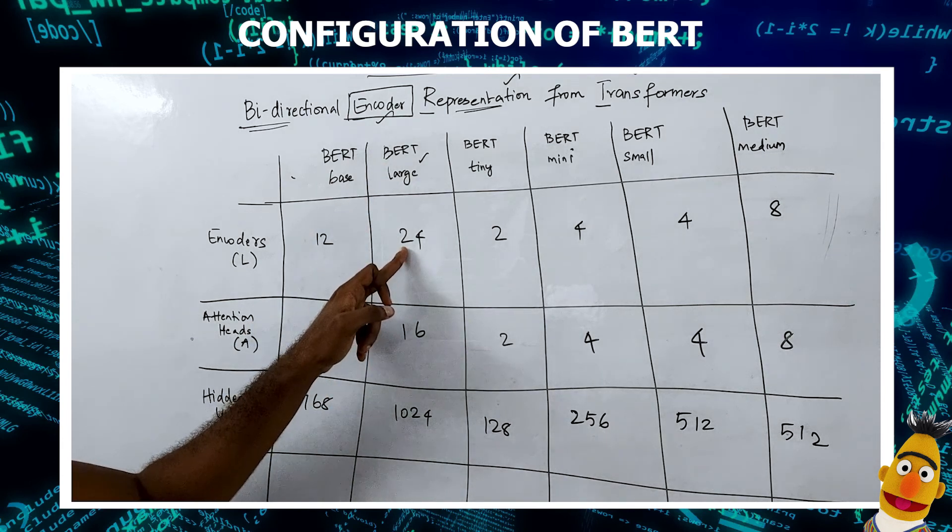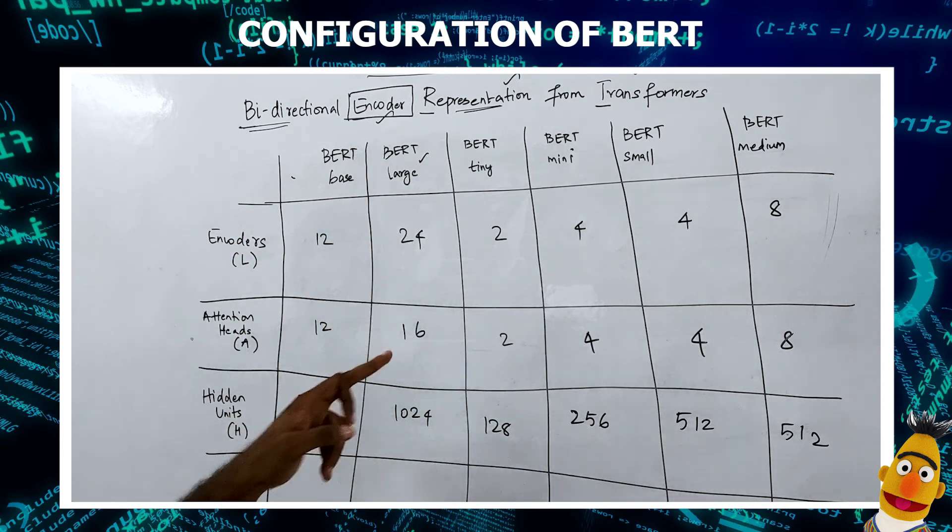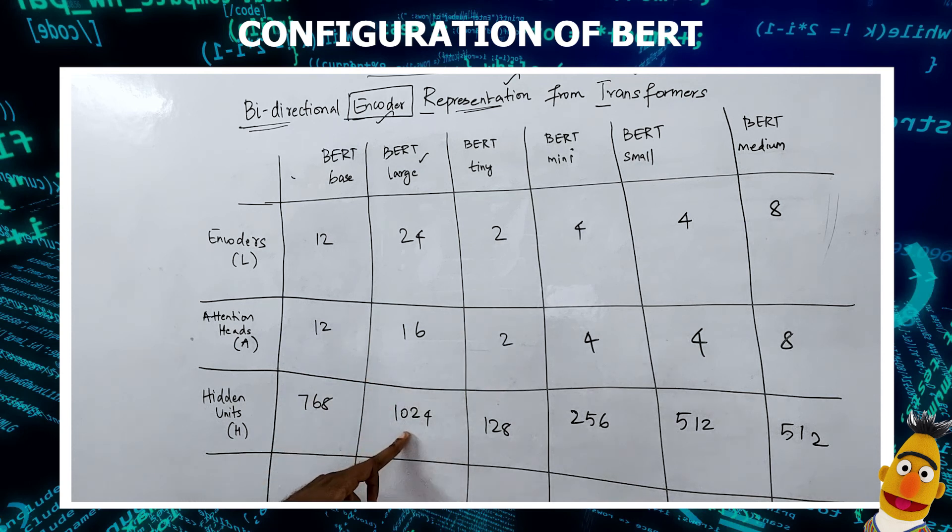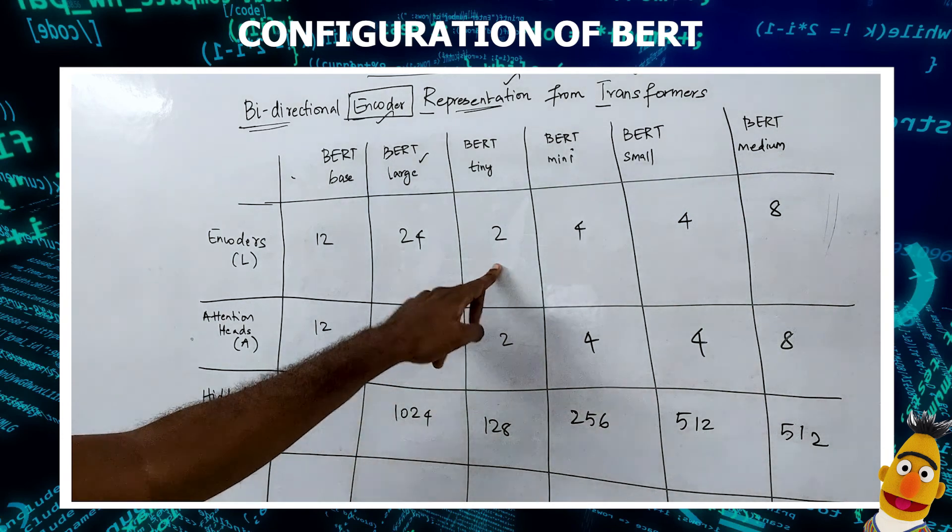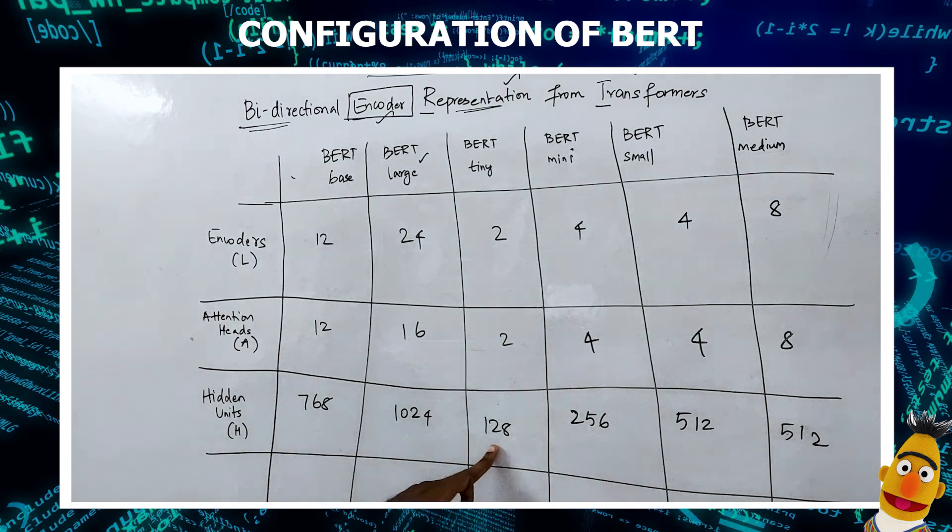BERT large is the largest of all. It has 24 encoders, 16 attention heads, and 1024 hidden neurons. BERT tiny is the smallest—it just has 2 encoders and 128 hidden units.